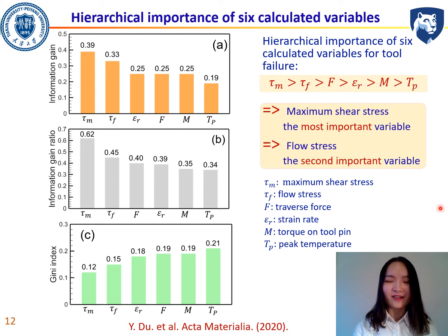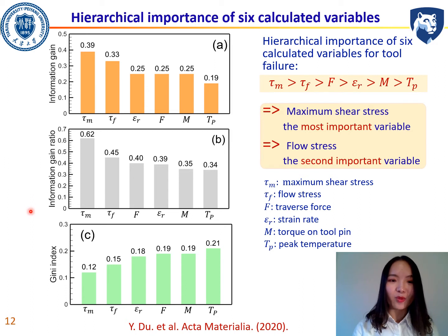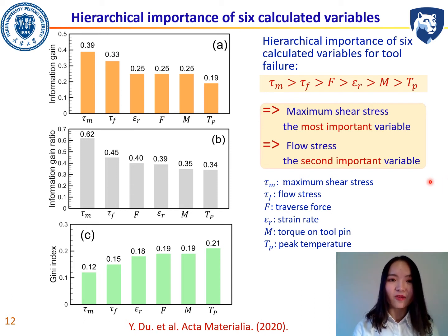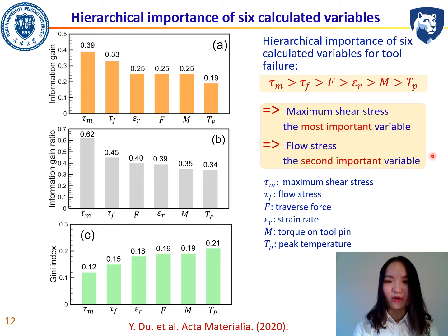Another important question is: among the six calculated variables, which one is most important for prediction? We used three different feature selection indices — information gain, information gain ratio, and Gini index — to determine the hierarchical importance of the six variables. All three indices give the same result: maximum shear stress is the most important variable, and flow stress is the second most important.